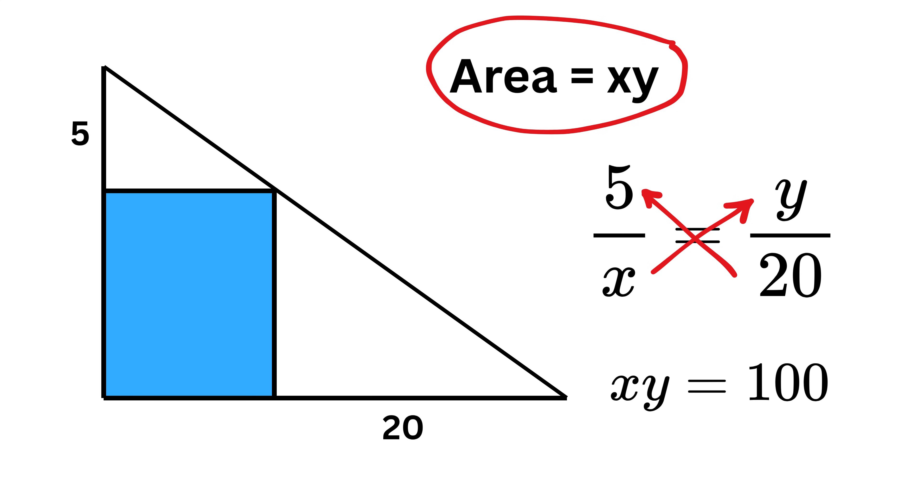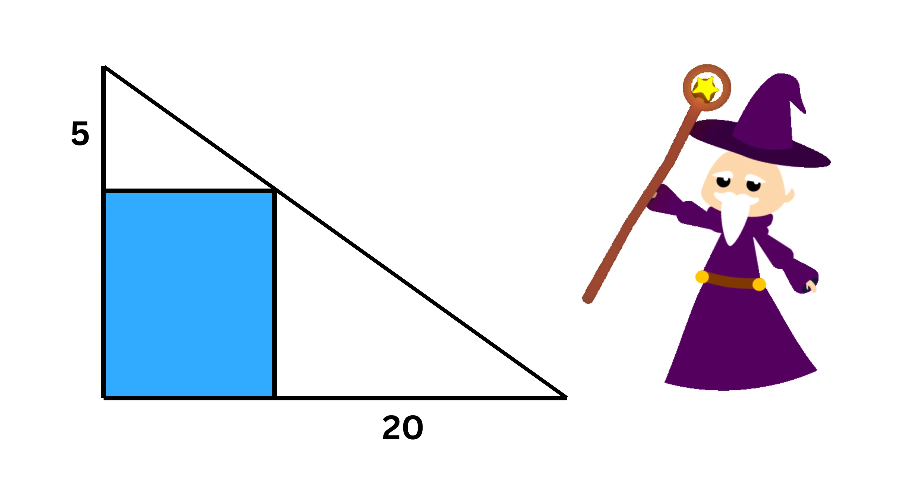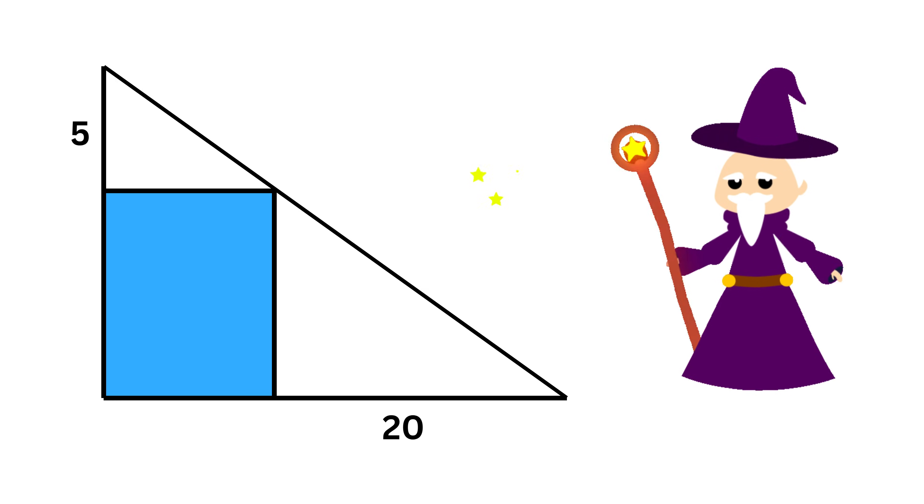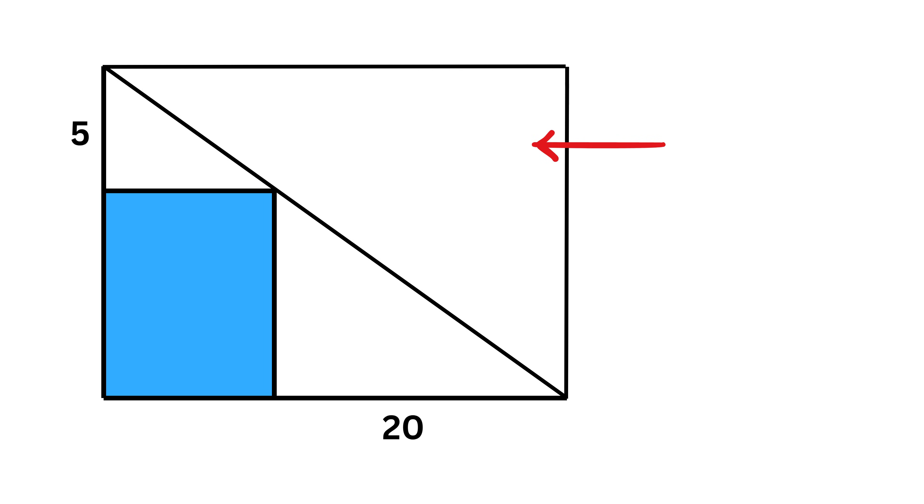Now here comes the magic. Do one thing, make a right angle like this such that we have a big rectangle. Now extend this line like this and also this line like this. What do you observe? By symmetry, these two triangles have the same area and similarly these two triangles also have the same area.